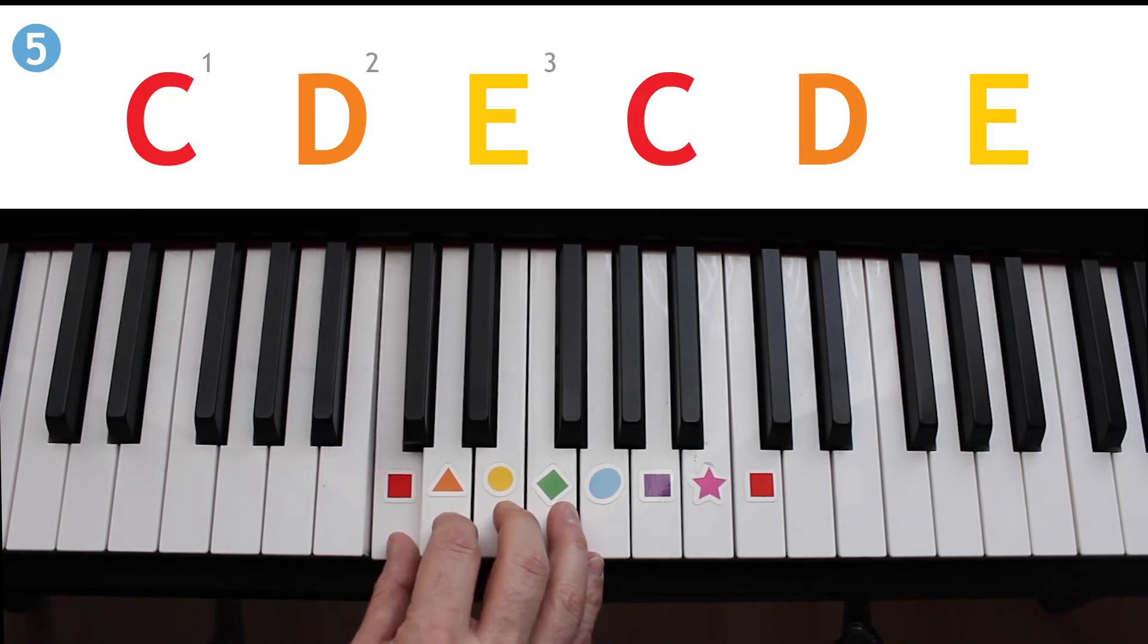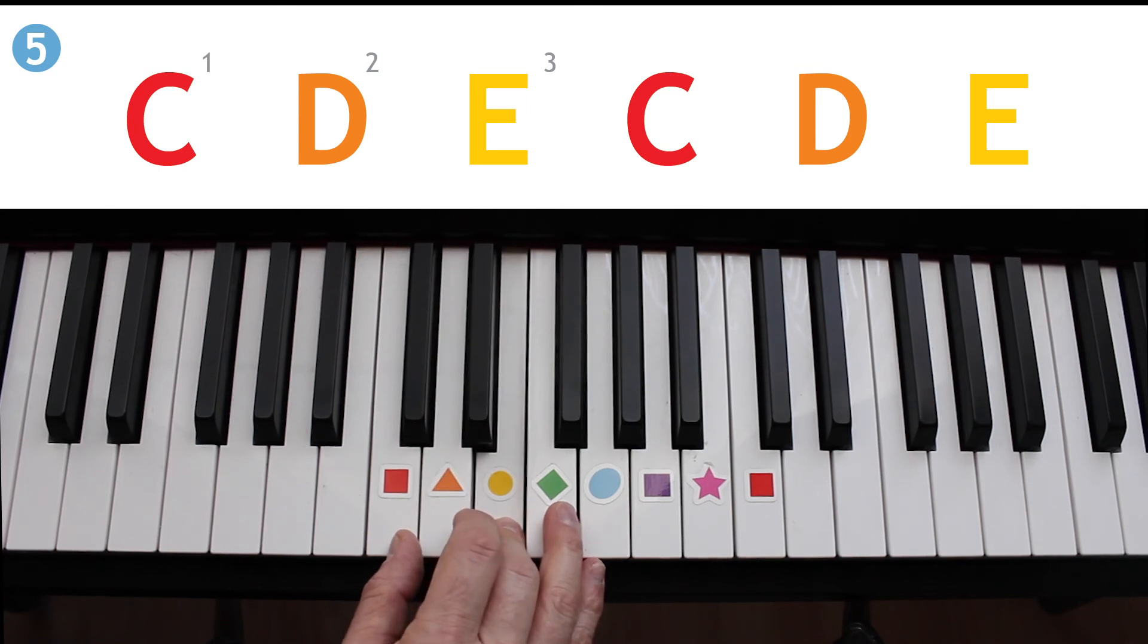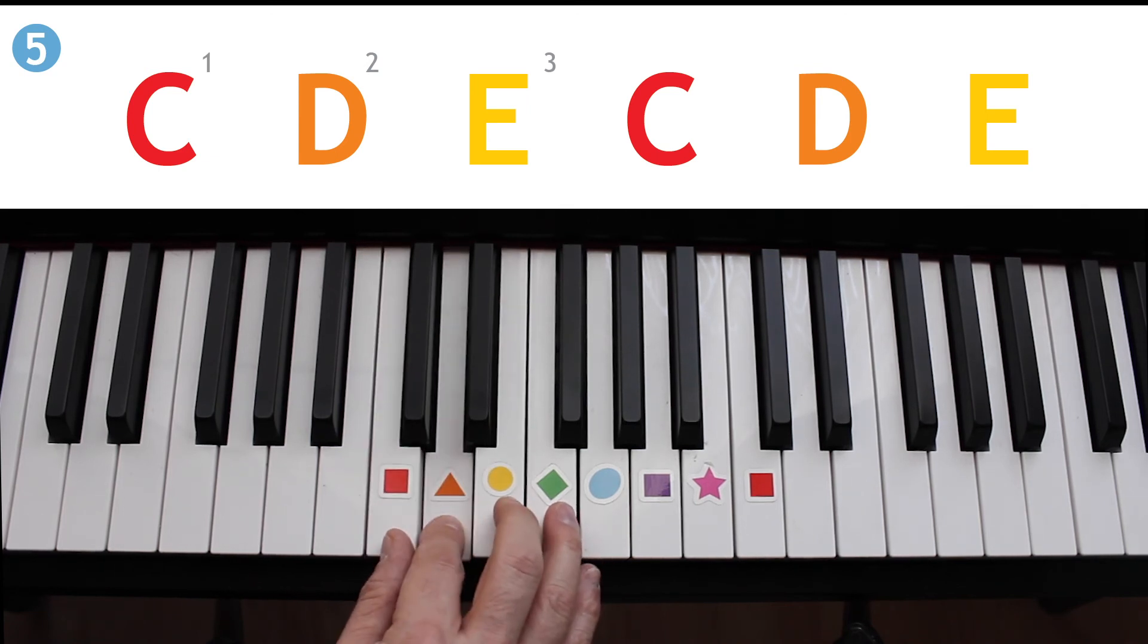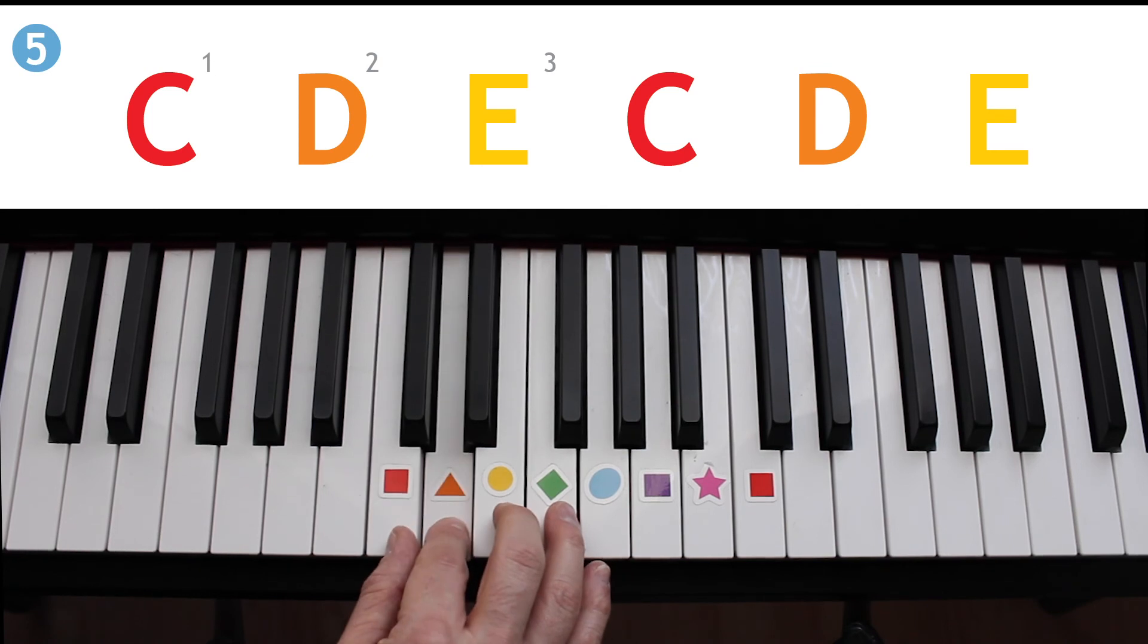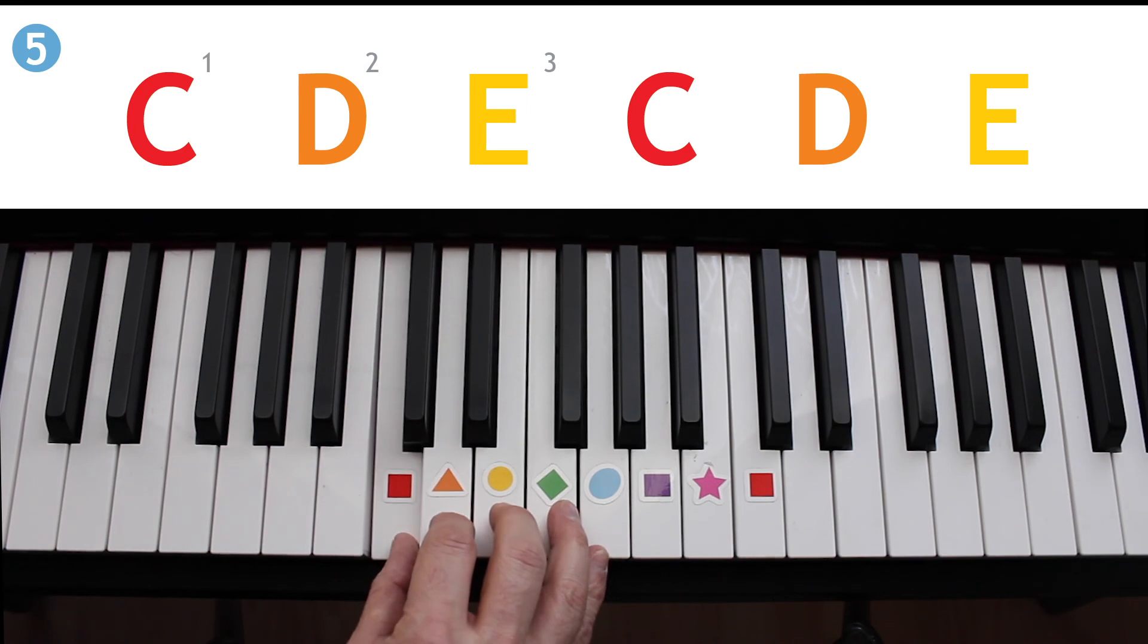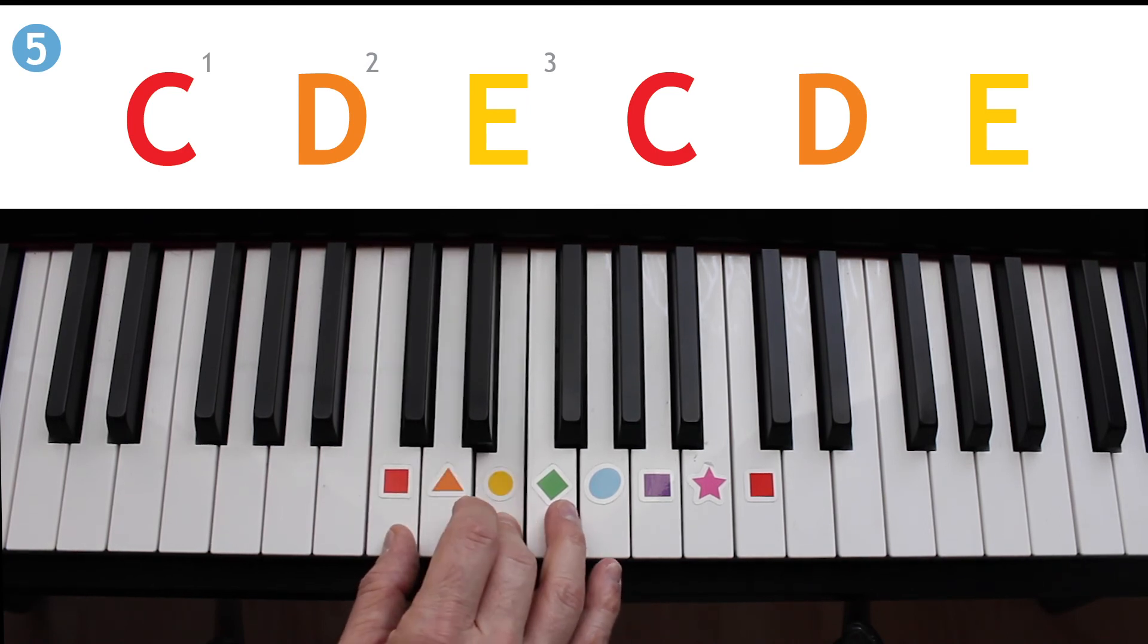Now exercise number five. We have two repetitions of C, D, and E using the same fingers, and then again C, D, E. Let's give that a shot. One, two, ready, go: C, D, E, C, D, E. With our finger numbers, one, two, ready, go: one, two, three, one, two, three. One last time without saying anything. One, two, ready, go.